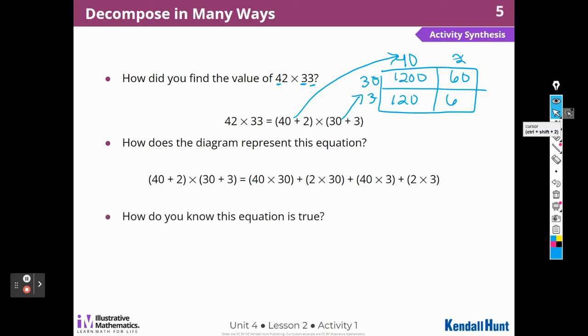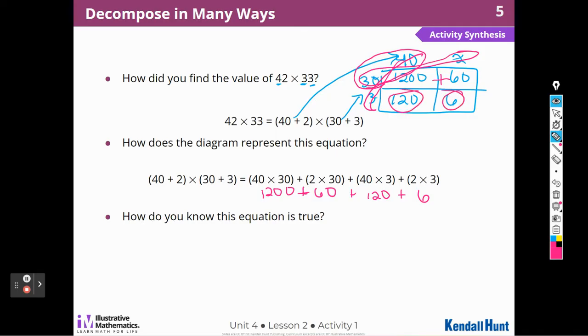How do you know this equation is true? Well, 40 plus 2 times 30 plus 3 is the same thing as saying 40 times 30 plus 2 times 30. So let's look at that. Let me get a different color here. 40 times 30, that's here, plus 2 times 30, that's here. And we did that, and that was 1,200 plus 60. And then we did 40 times 3, which is 120, plus 2 times 3, which was 6. So how do we know this equation is true? Because we used all of the partial products to be able to decide those answers.